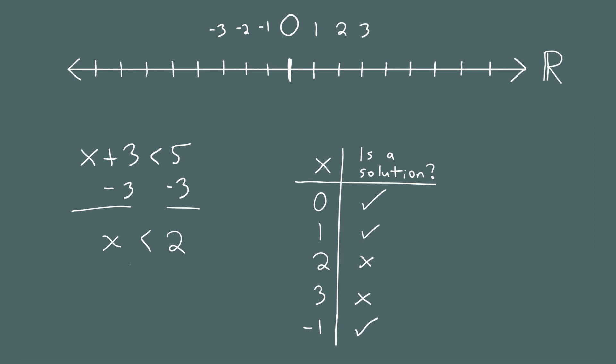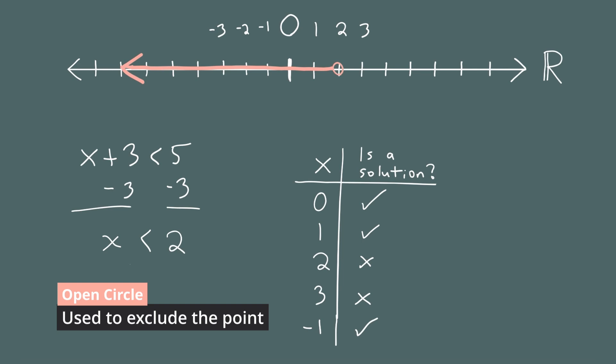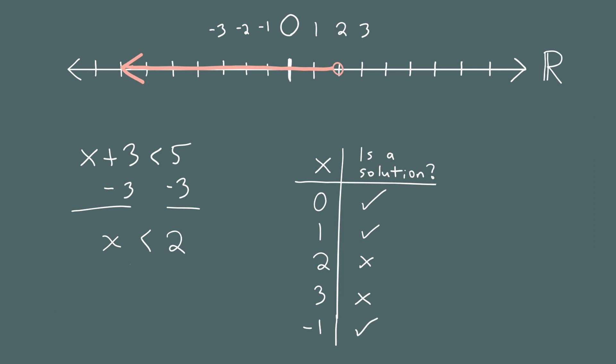We can visualize the solutions by graphing on the real number line. We want to highlight the entire region less than 2. At 2, we draw an open circle and shade all the region to the left, drawing an arrowhead to show it continues forever. The open circle indicates where the region stops but that specific point is not included.